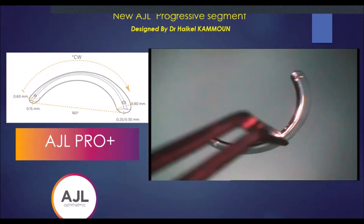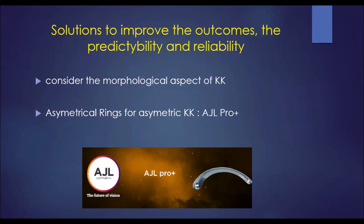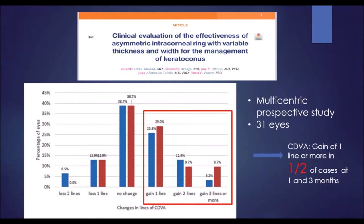This is a new progressive segment from IGL. It features a double progression in both width and thickness, and with this double progression we achieve better effects and outcomes. The solution today to improve results is, first, to consider the morphological aspect of keratoconus, and second, to use progressive segments in asymmetrical keratoconus.